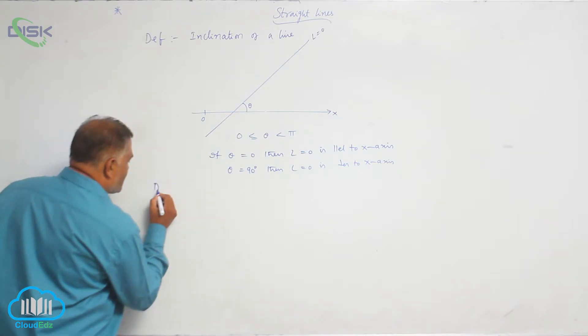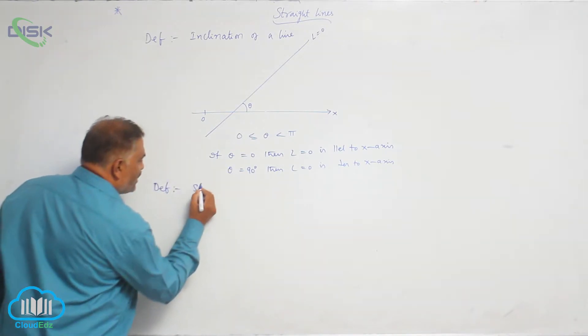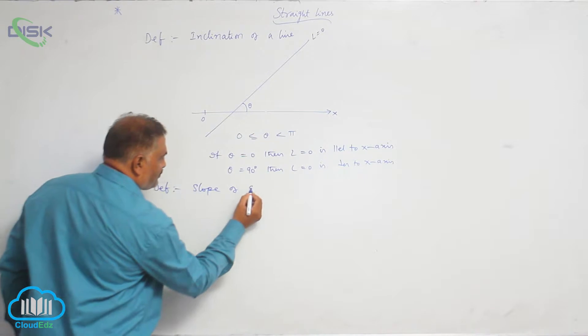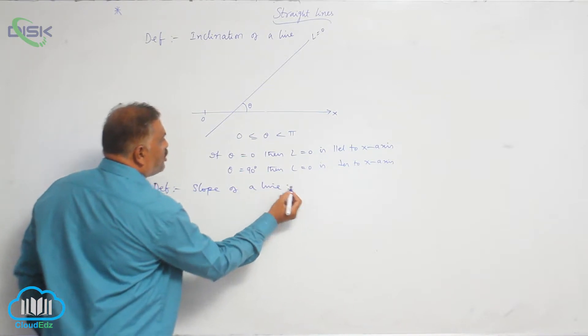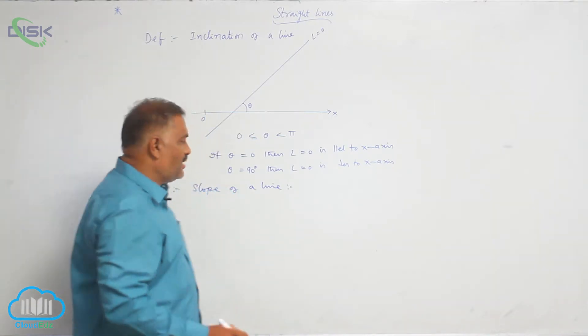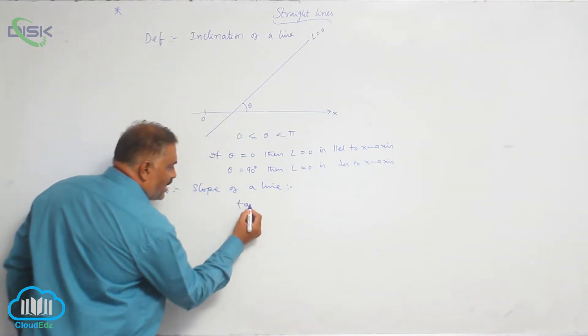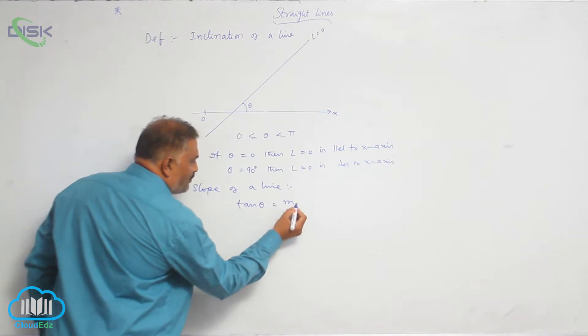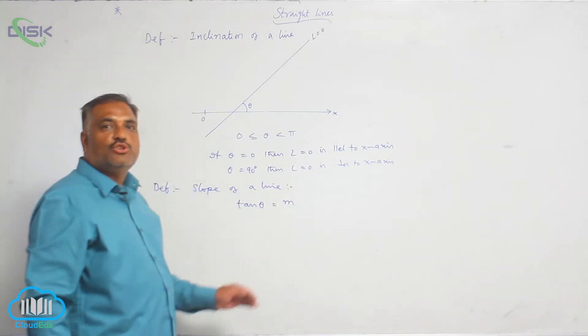Now second definition, slope. Slope of a line. Already we discussed about the inclination. The tangent of angle of inclination, that is tan theta denoted by m, is called the slope of a given line.